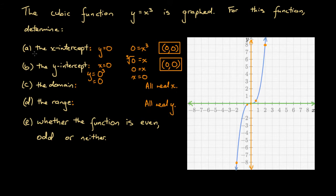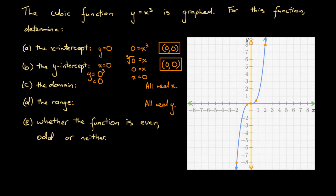Finally, let's determine whether this function is even, odd, or neither. One way is to check graphically for symmetry about the y-axis: reflecting this graph in the y-axis gives a different graph, so it is not even. However, it does have point symmetry around the origin, which is the definition of an odd function. If we rotate this graph 180 degrees, we get exactly the same graph. Consequently, this function is odd.